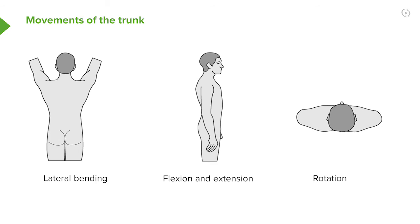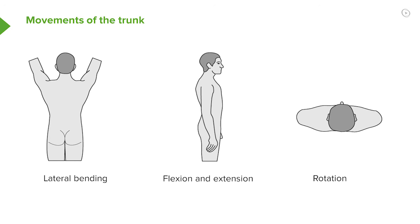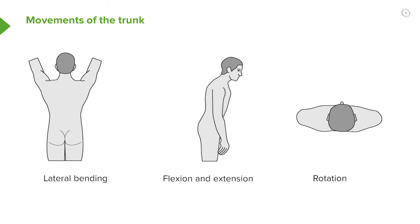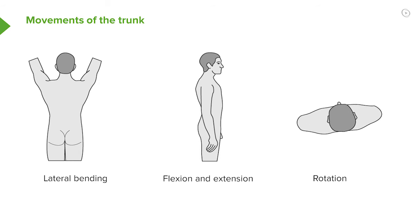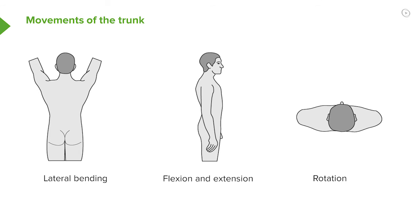We have extension, and we have flexion carried out by rectus abdominis — similar to the sit-up position. And then we have rotation, where the body rotates around. All these movements are coordinated by some, if not all, of those anterolateral abdominal wall muscles — so these are the important movements of the trunk.